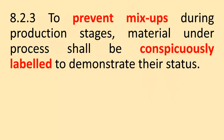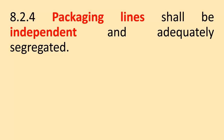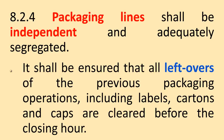To prevent mix-ups during production stages, material under process shall be conspicuously labeled to demonstrate their status. All equipment used for production shall be labeled with their current status. The packaging line shall be independent and adequately segregated. It shall be ensured that all leftovers of the previous packaging operations, including labels, cartons and caps, are cleared before the closing hour.